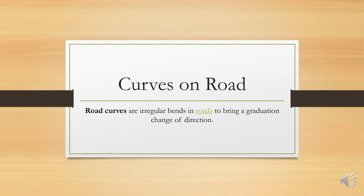First, what are curves? Road curves are irregular bends in roads to bring a gradual change in direction. In simple language, curves are turns on roads. Throughout the length of a road, it is not straight — there are many turns. When we go straight and then take a right or left turn, that is a curve.